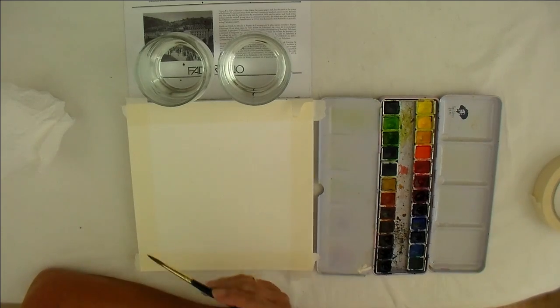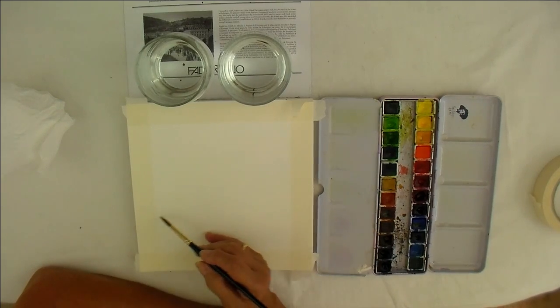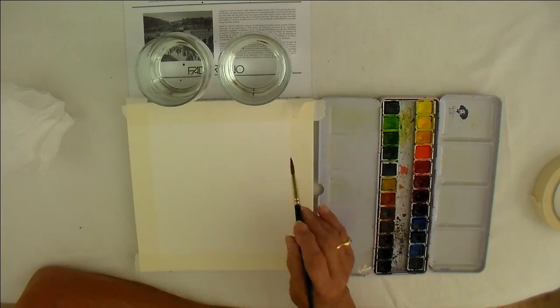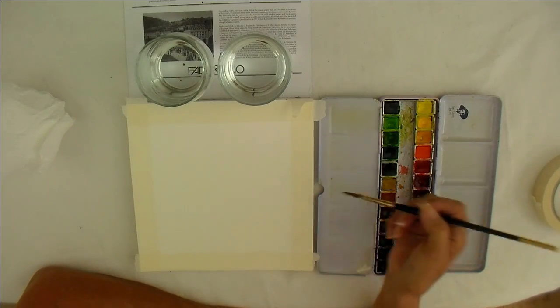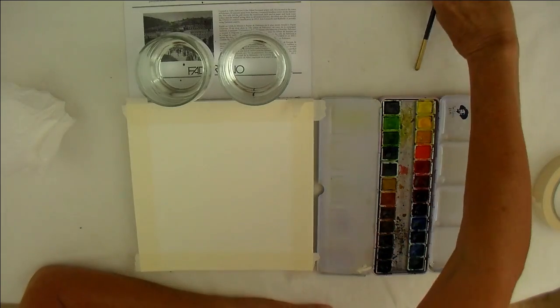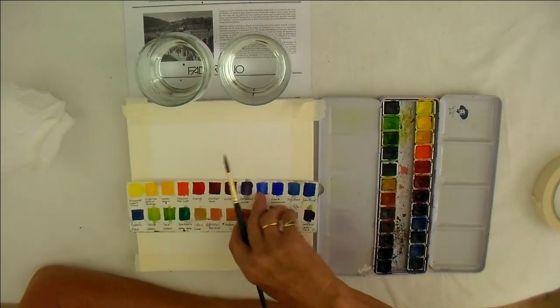So, lavender. There's going to be the slight rim of the pot here. The lavender will be coming out the top. The light will be coming this way. Now, what colors am I going to use? Let's have a look.